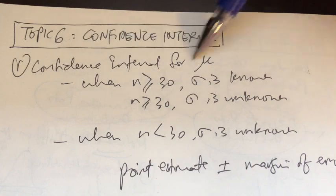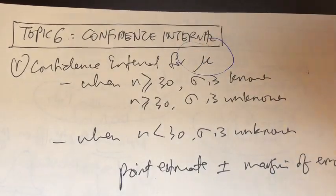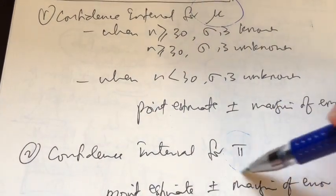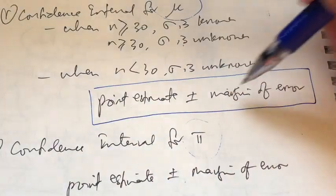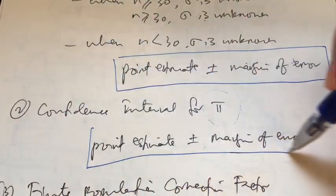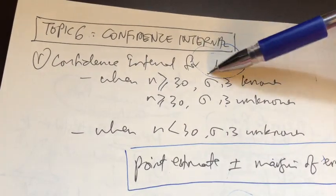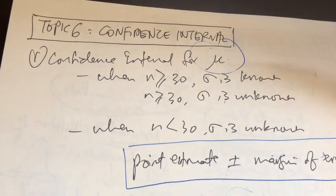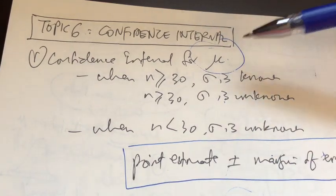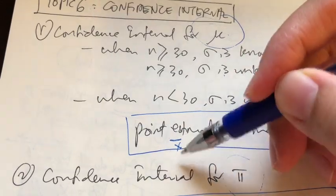In topic 6, we learned about confidence intervals. There are generally two confidence intervals: one for the population mean, and one for the population proportion. For both cases, the general formula is the same: point estimate plus or minus margin of error. The point estimate refers to the sample statistic used to estimate the population parameter. For population mean mu, the best estimate is x-bar, so our point estimate is x-bar.